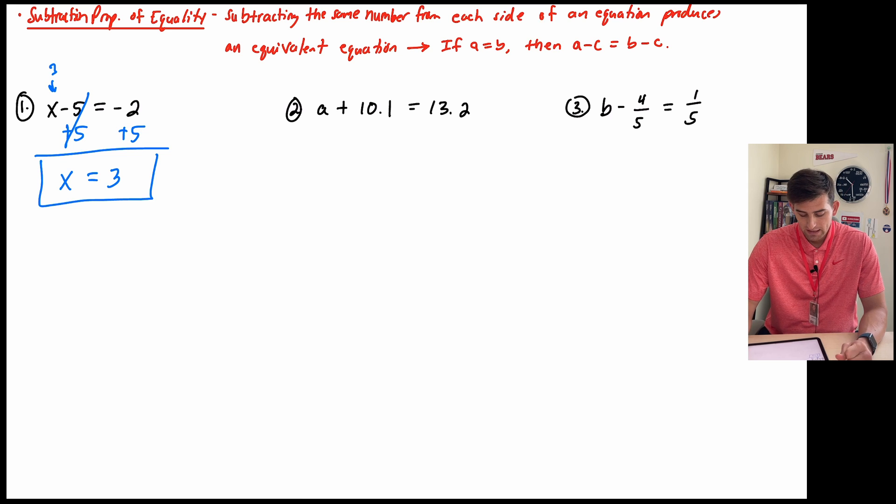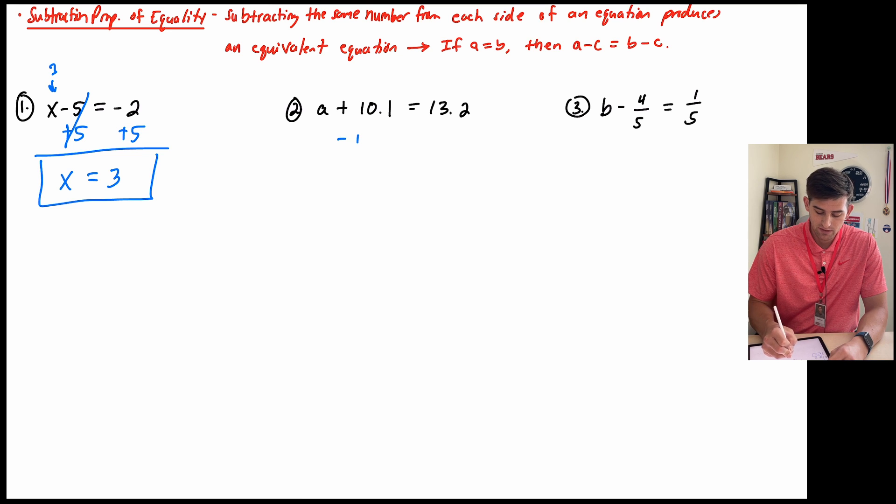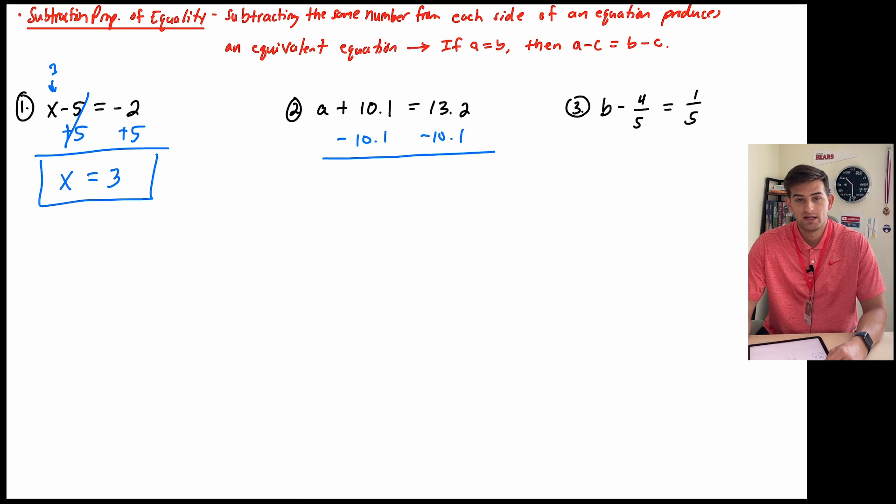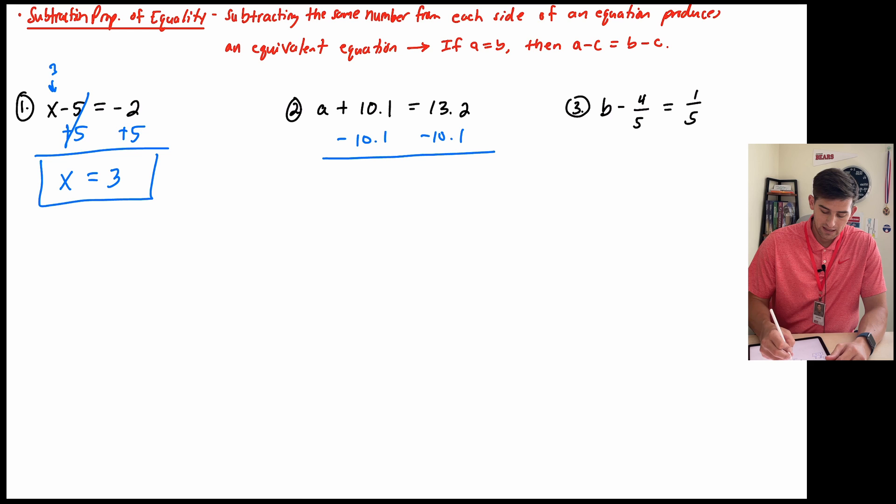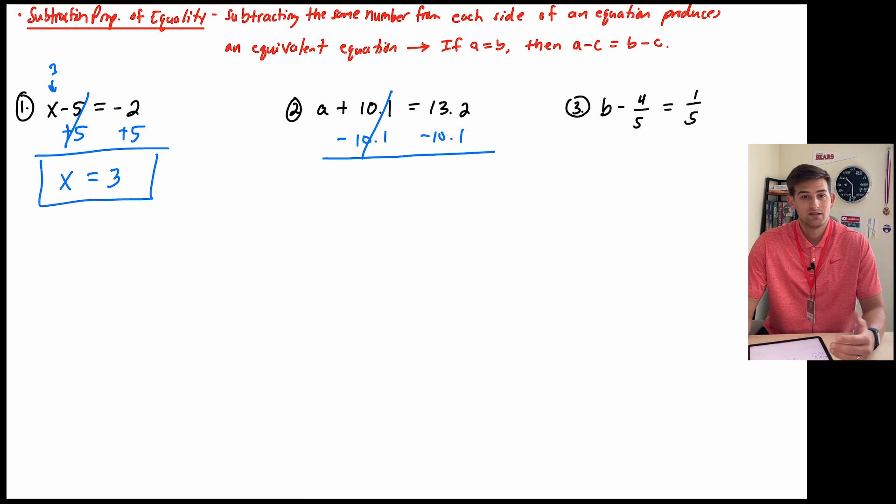Alright, look at number 2. Now we have A plus 10.1 is equal to 13.2. So now we want to do the opposite of add 10.1, which would be subtract 10.1. And remember, whatever we do to one side, we need to do to both sides. The reason why we're subtracting is because it's opposite of add 10.1, and the reason it's 10.1 is because positive 10.1 minus 10.1 would cancel out, right? It would equal 0.